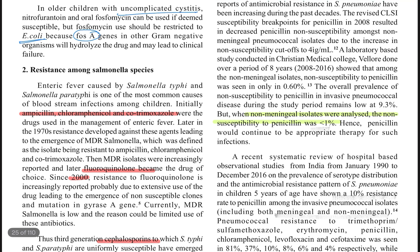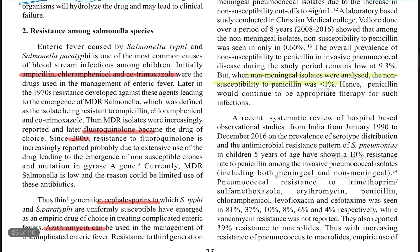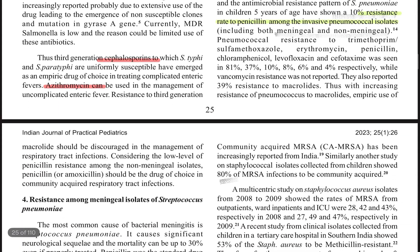A recent study from CMC Vellore — where most Indian antimicrobial resistance studies in children are conducted — found that in children up to 5 years of age, nearly 10% resistance to penicillin was noted in invasive pneumococcal isolates, both meningeal and non-meningeal. However, vancomycin resistance is not present. For non-meningeal pneumococcus like pneumonia, ceftriaxone or amoxicillin is a good drug of choice.